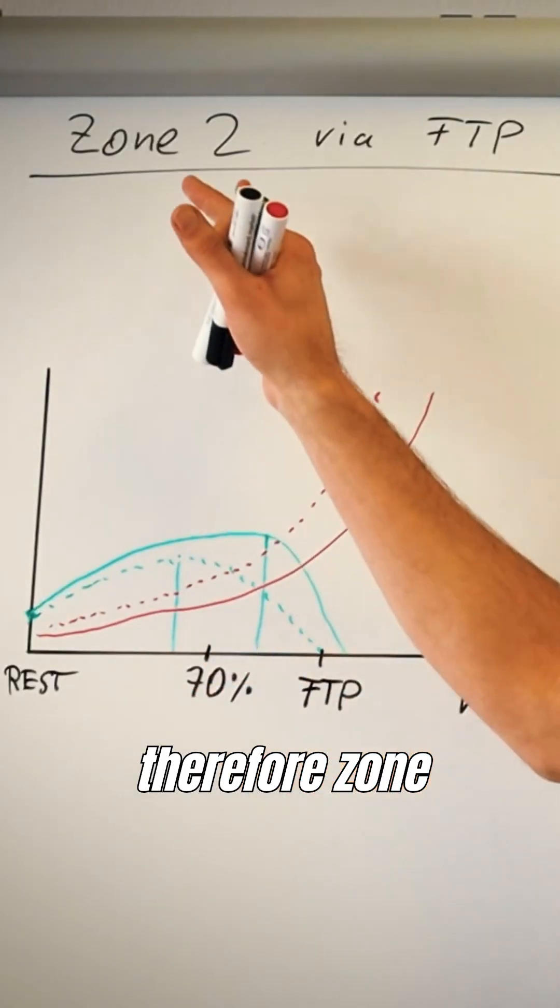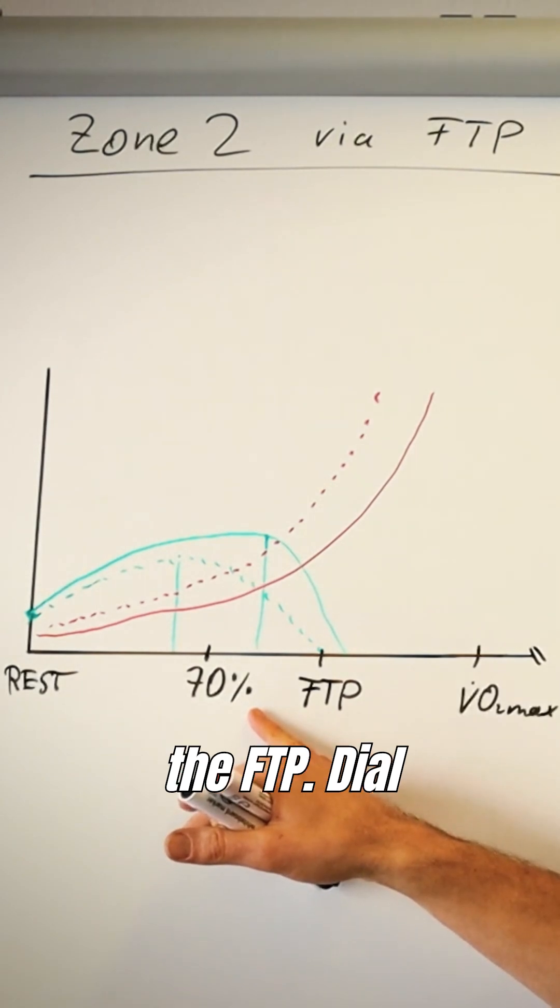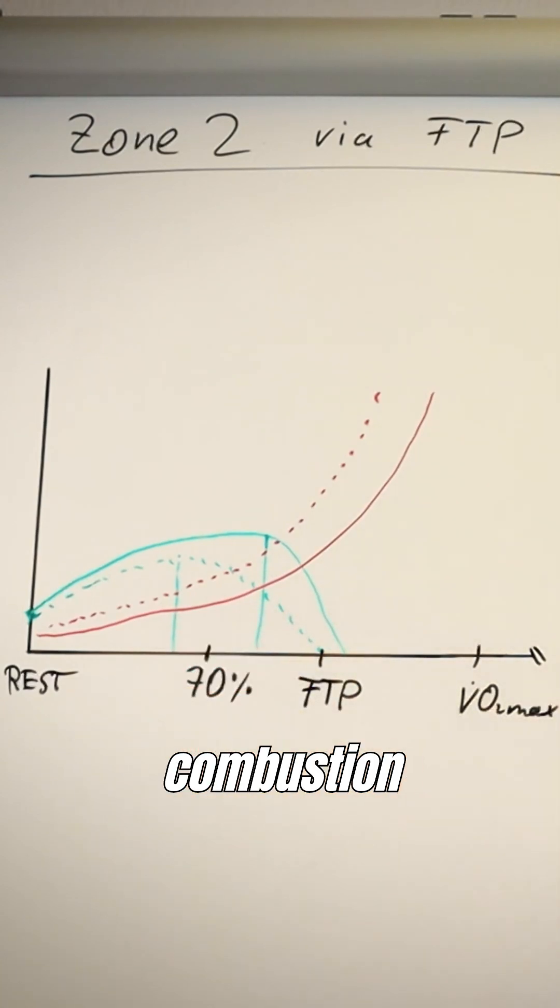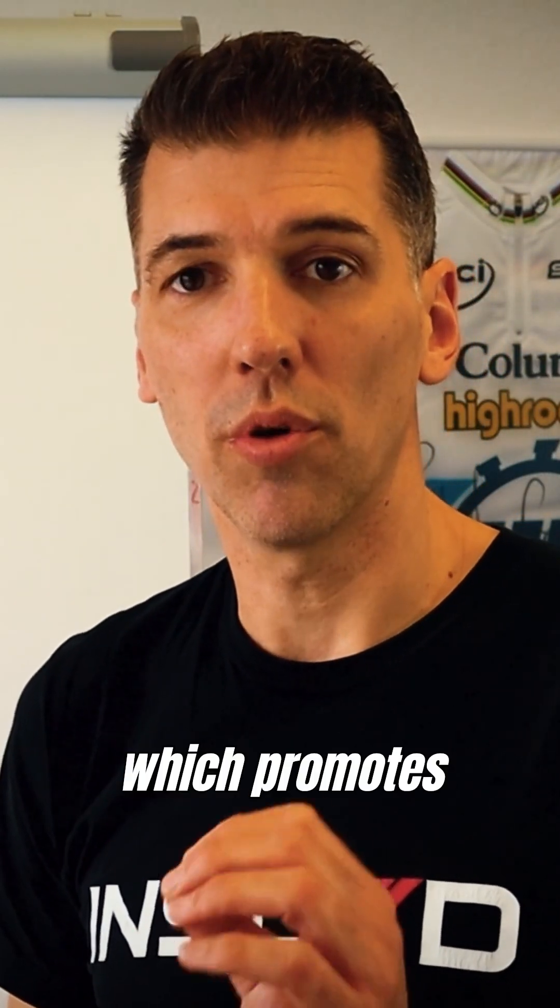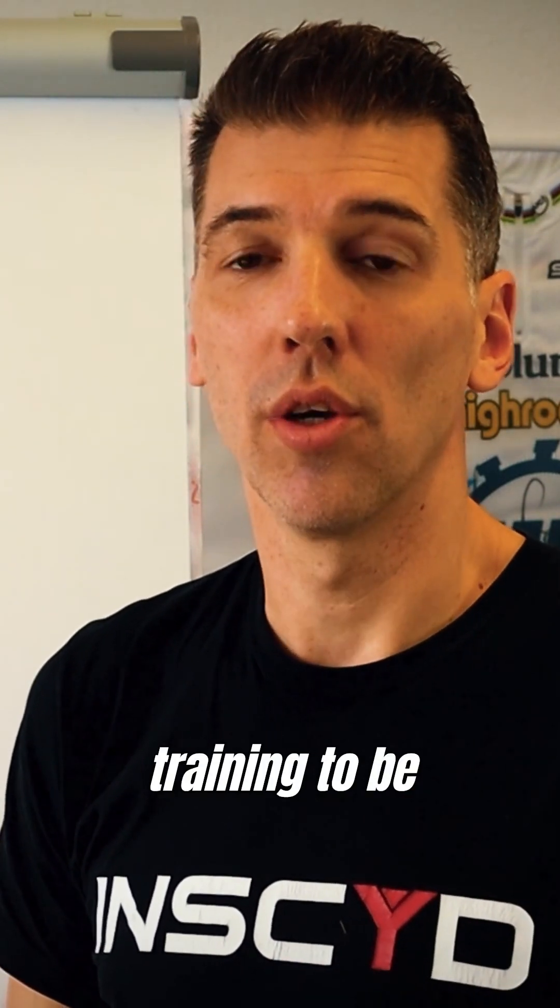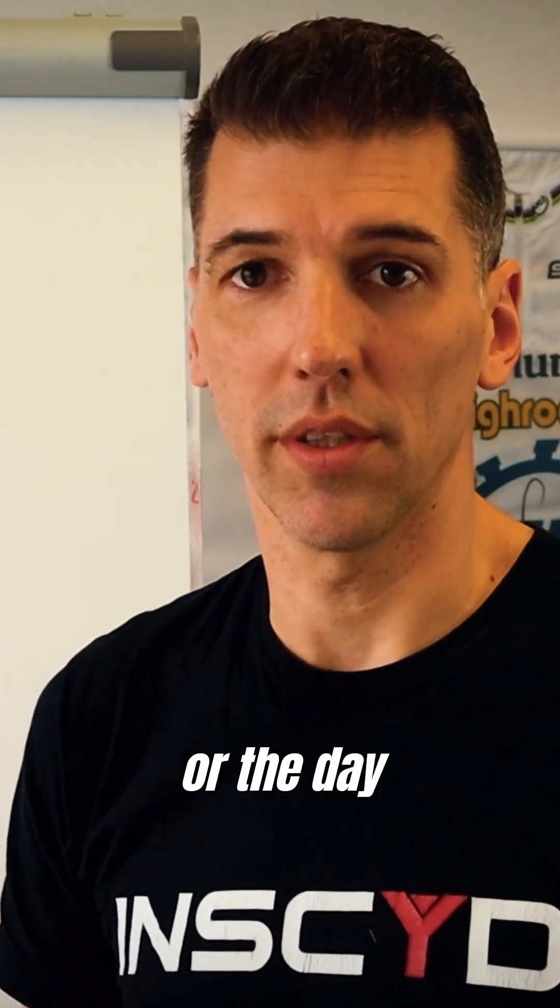So, Zone 2 training done right: don't use a fixed percentage of the FTP. Dial in your fat combustion rates and carbohydrate combustion rate so that you really hit that intensity which promotes the best aerobic adaptation and allows you to understand what you should be feeling during the training and after, to be ready for the next training session, either the next day or the day after.